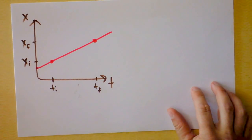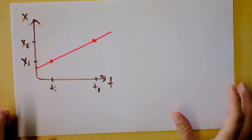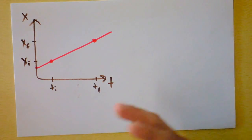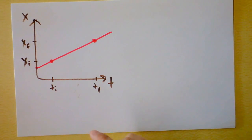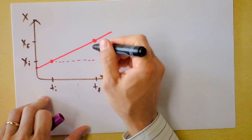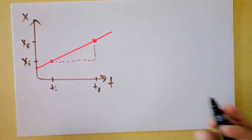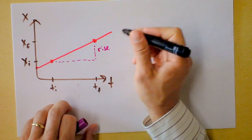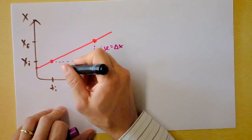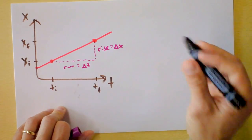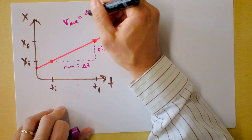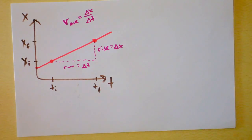In the previous video we saw that if a position versus time graph is a straight line, we've got a constant slope with physical meaning. We can make a little right triangle and identify the rise as the change in X and the run as the change in time, finding that average velocity equals Delta X over Delta T.